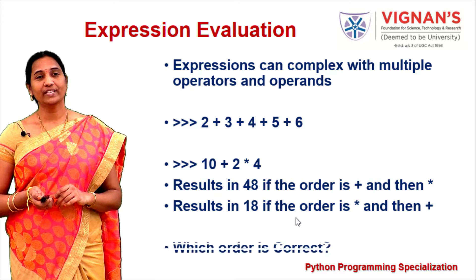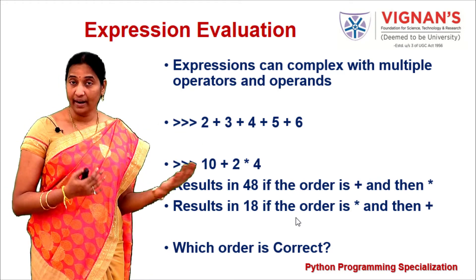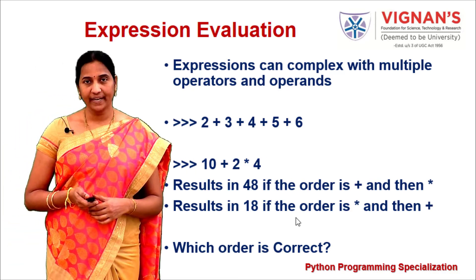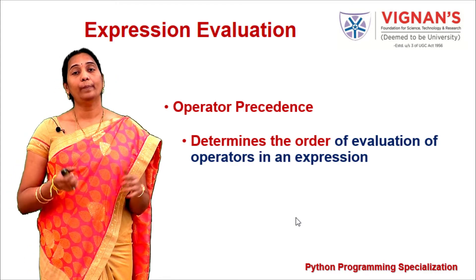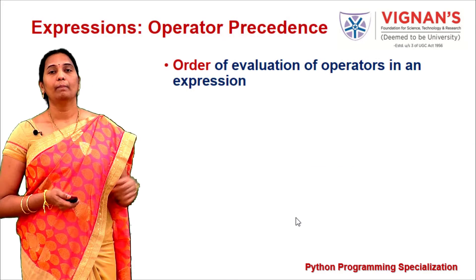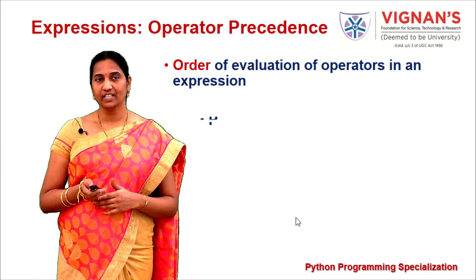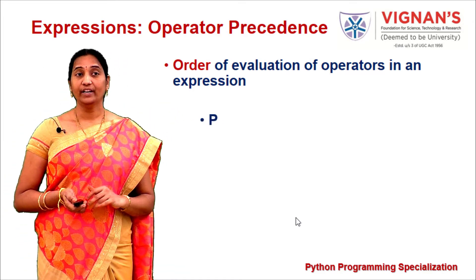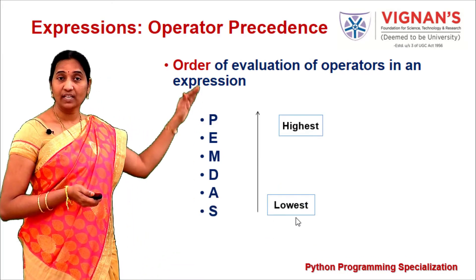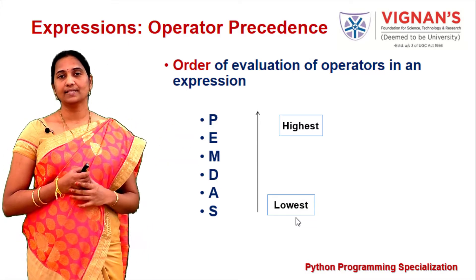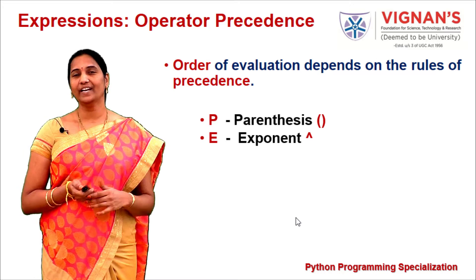We're not sure which result — 48 or 18 — is correct. To resolve this, we use operator precedence, which determines the order in which operators must be evaluated. When an expression contains multiple different operators, operator precedence tells us which operation to perform first. A helpful mnemonic is PEMDAS, where P has the highest priority and S the lowest.